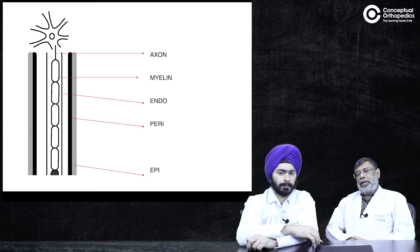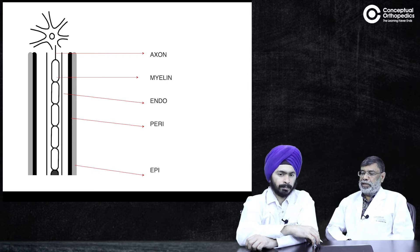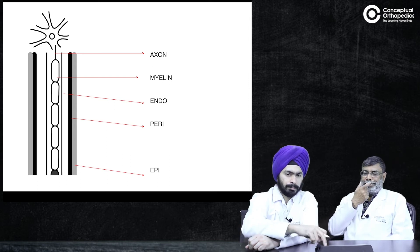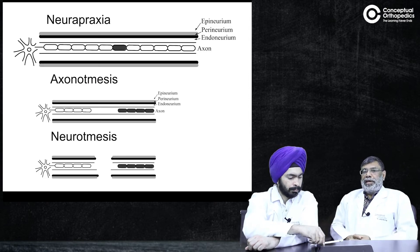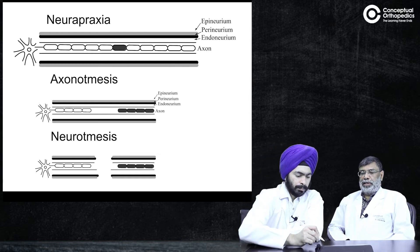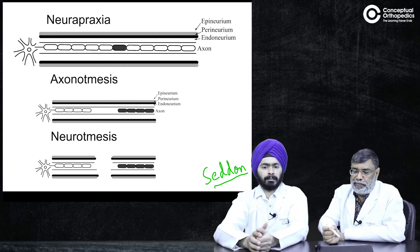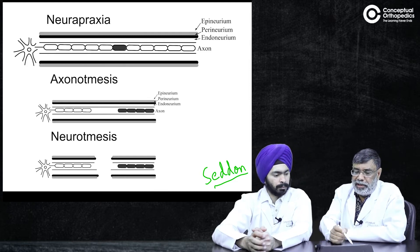Depending on the injuries, you can classify them by severity — whether the connective tissue of this endoneurium, perineurium, or epineurium is affected or not, or whether it's just a physiological block. The initial classification was by Seddon, which classically describes neuropraxia — just a block of the myelin, or physiological block. In neuropraxia, the axon is going all the way down without any problem, and it will either go to the next neuron as a synapse or go to the neuromuscular junction.